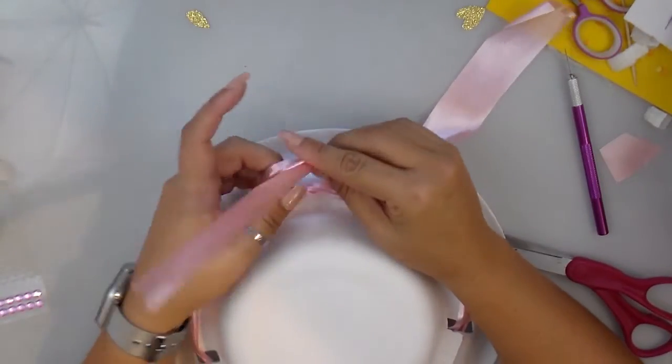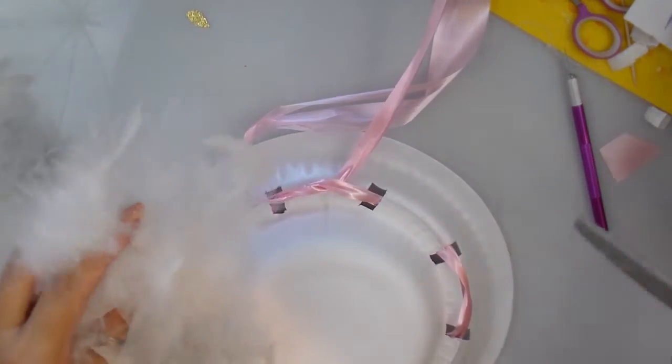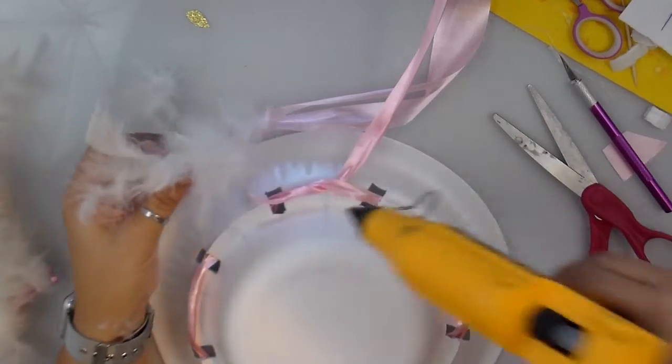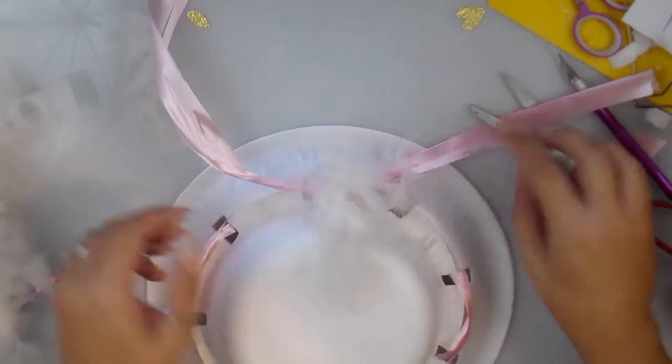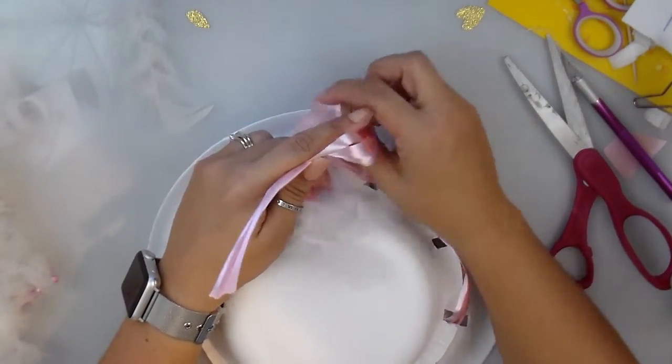I'm just going to make a little—this is a boa, it's like just little feathers—and I'm cutting a piece and I'm going to hot glue before I make the bow. So I'm going to hot glue there, and now I'm going to make the bow.